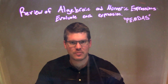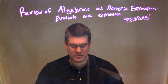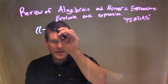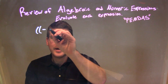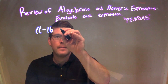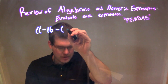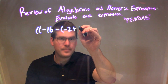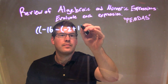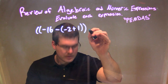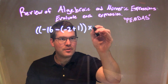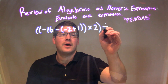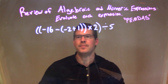I want to evaluate this expression. I was given: negative two, parentheses, negative 16, minus another parentheses, negative 2 plus 1, double parentheses, times 2, another parentheses, divided by 5. A lot of parentheses here.